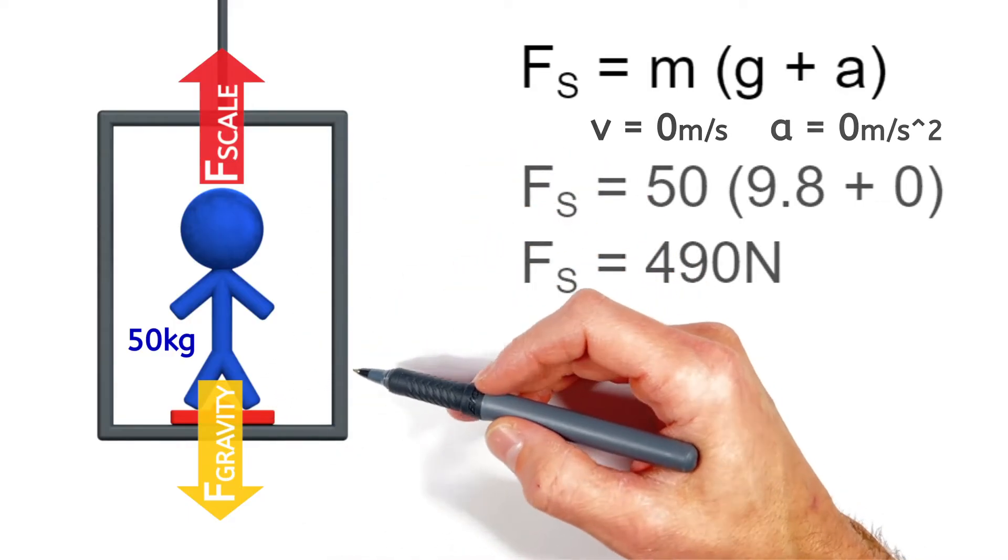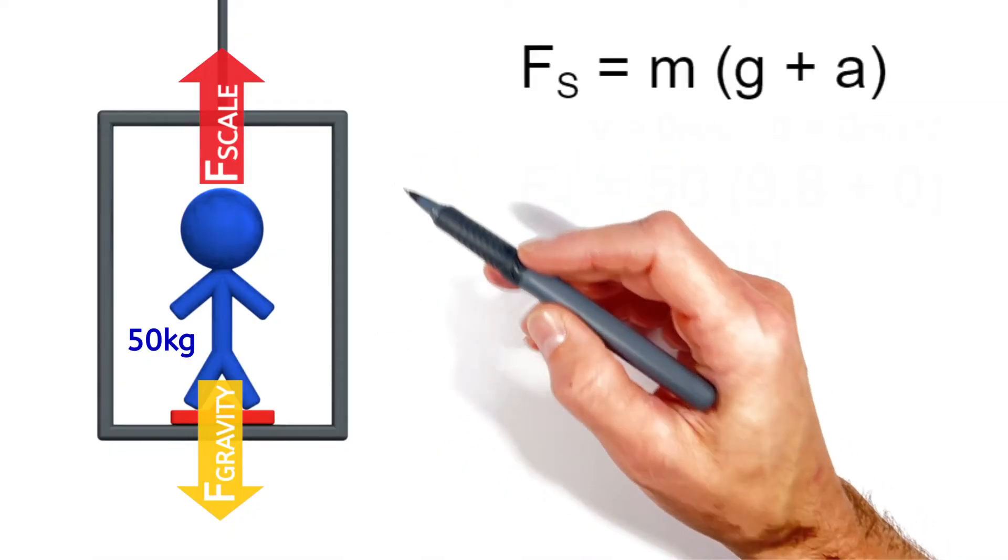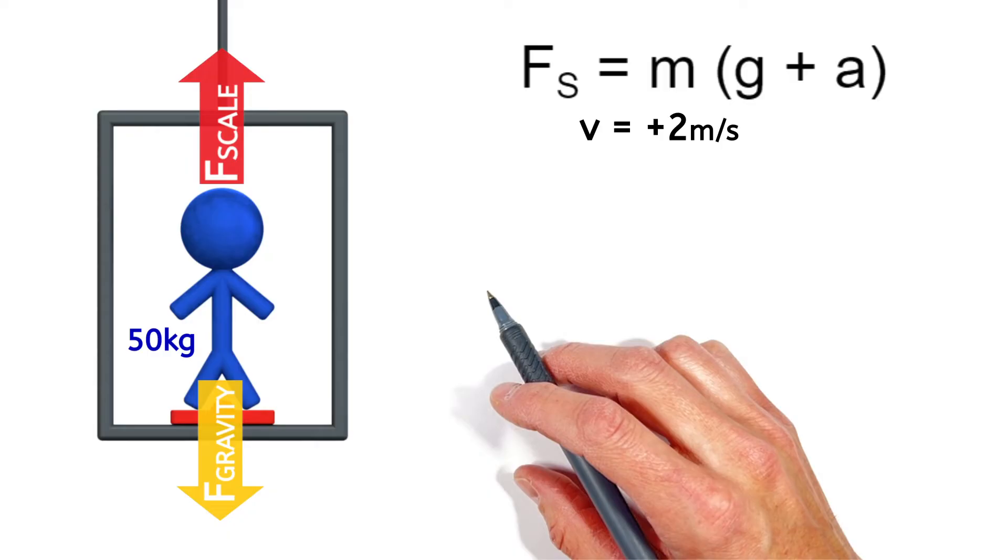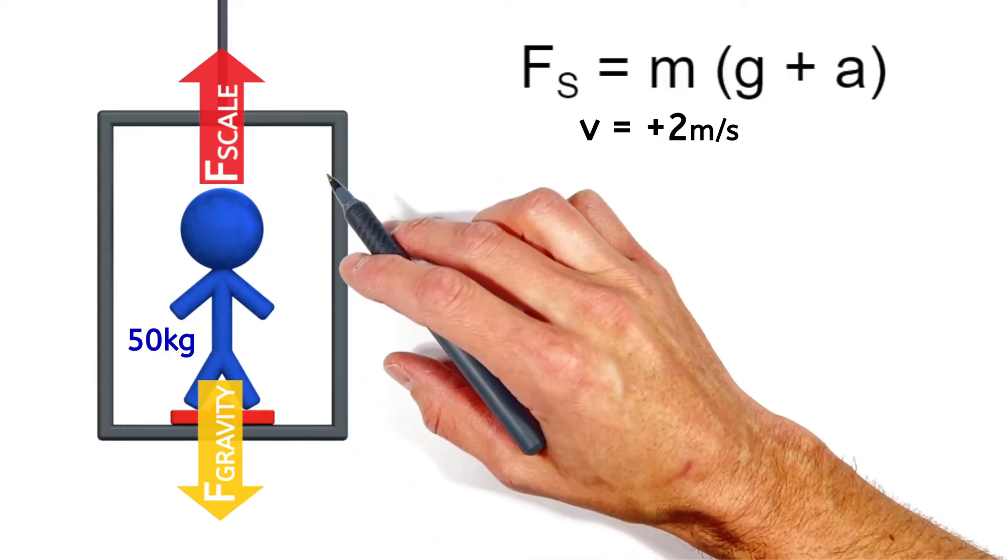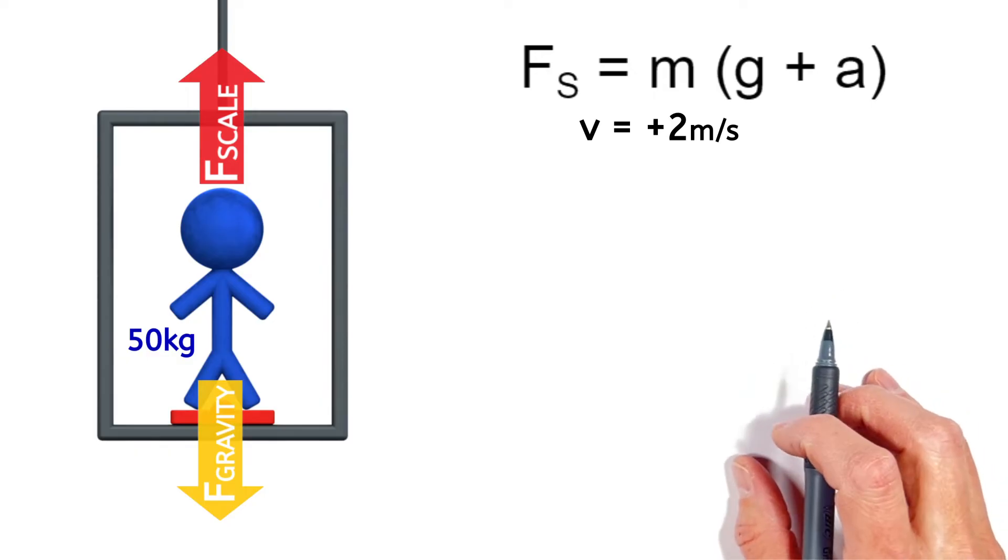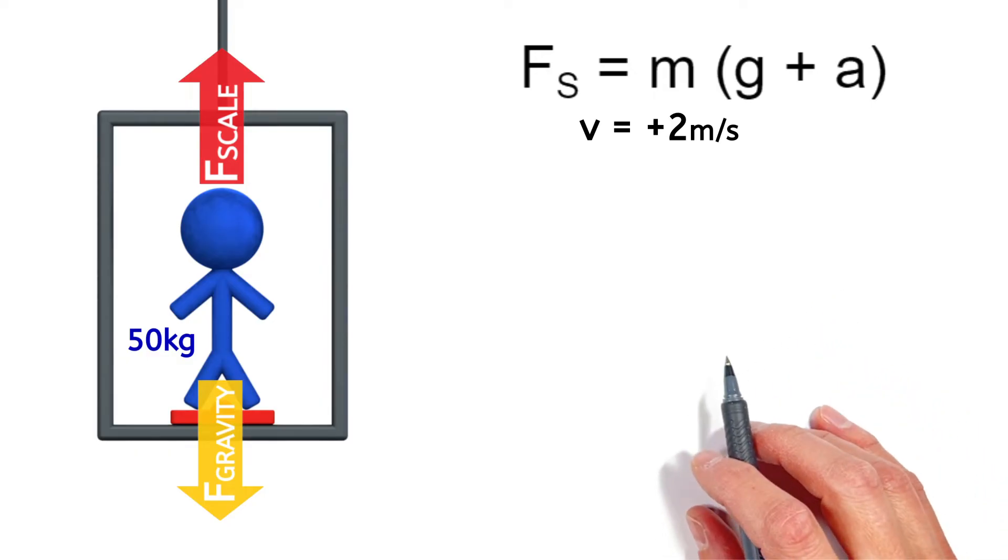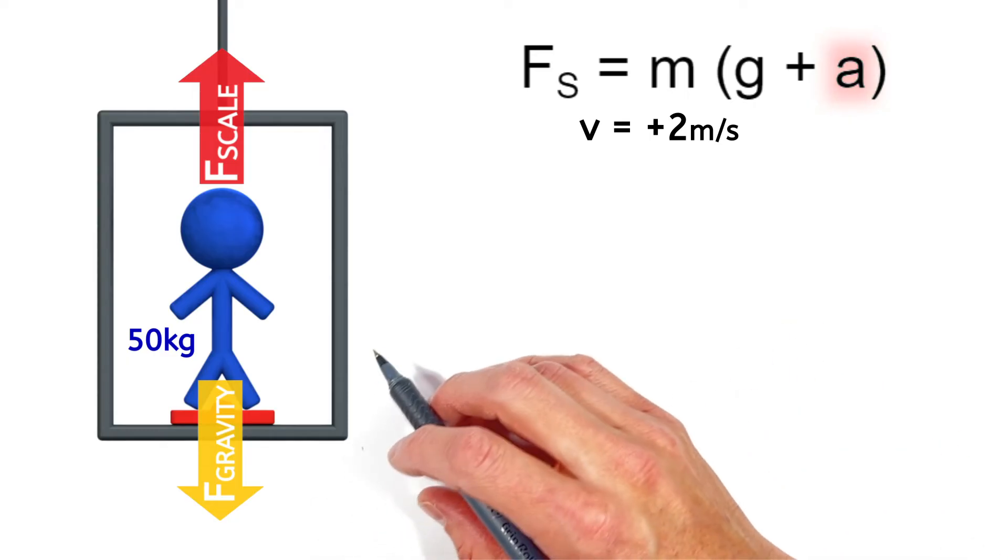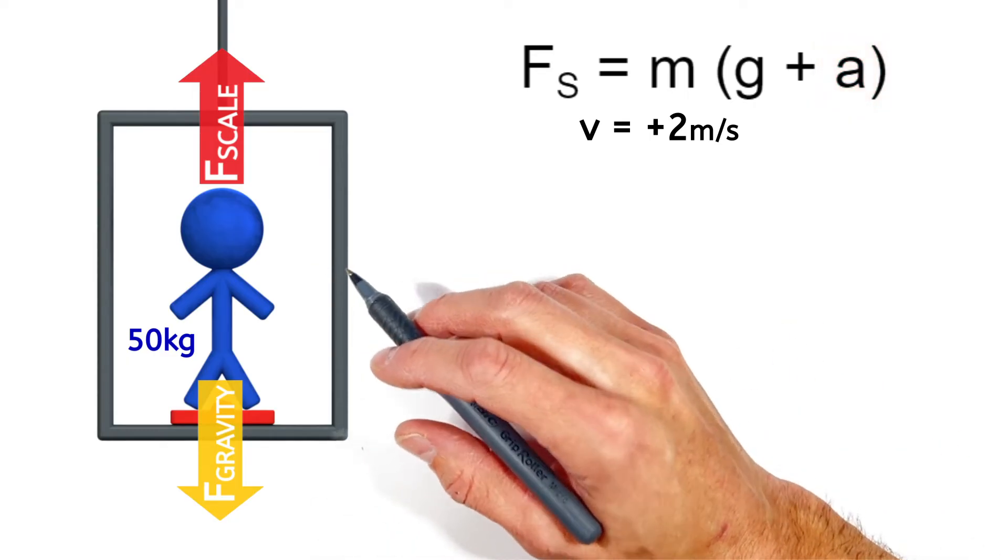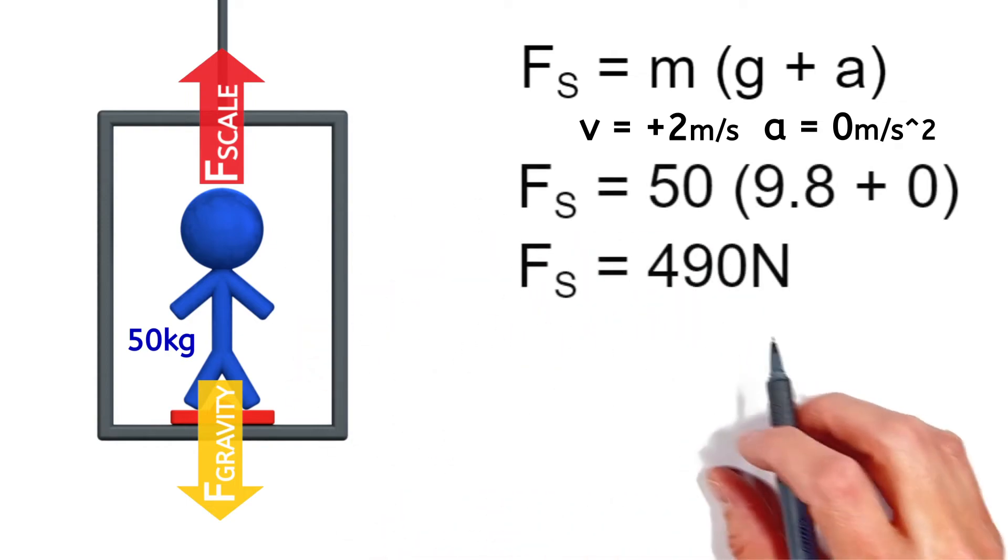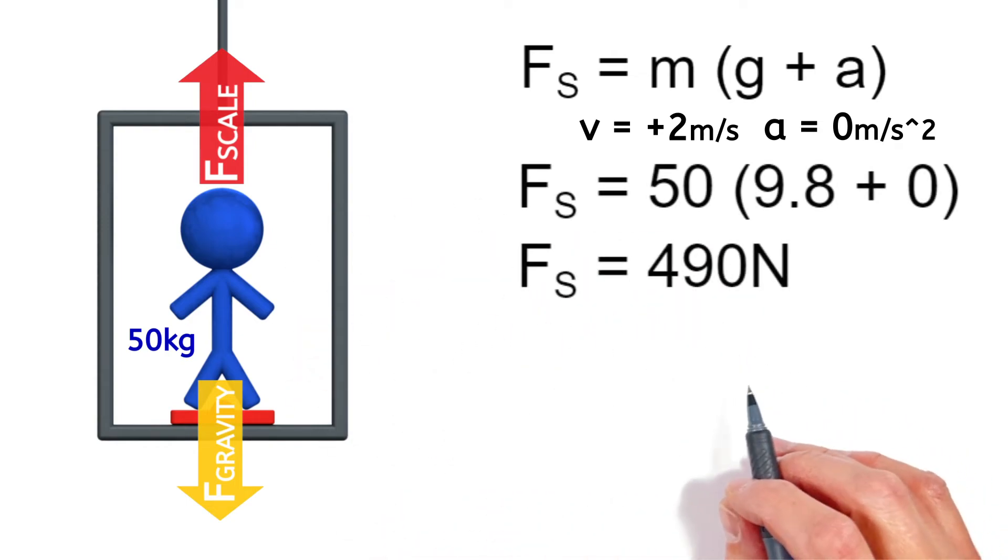But next, let's say this elevator is moving steadily upward at 2 meters per second. Now you may be inclined to think that there now has to be more force upward on the person because they're moving up. But remember, going back to our equation, the force on the person is dependent on their acceleration, not on their speed. A over here is still zero, meaning none of this math changes. The person in the elevator feels completely normal.